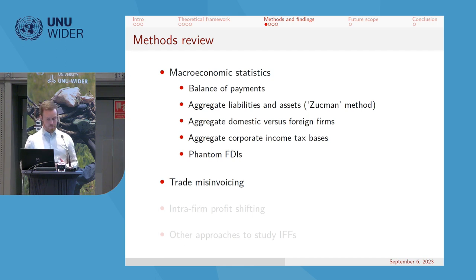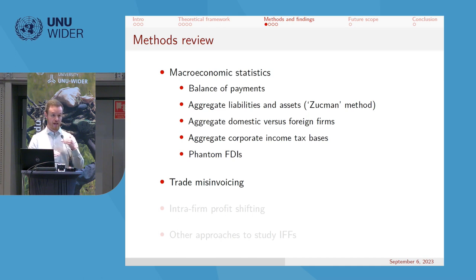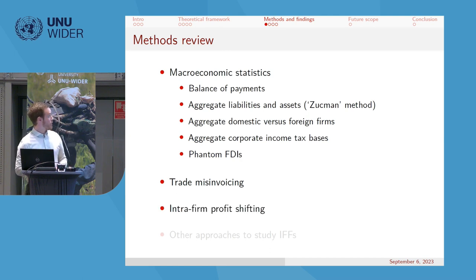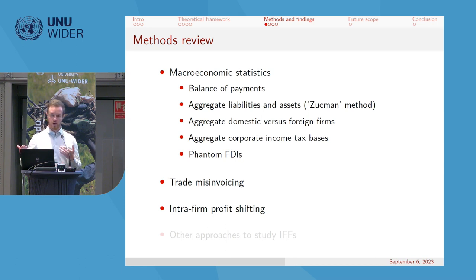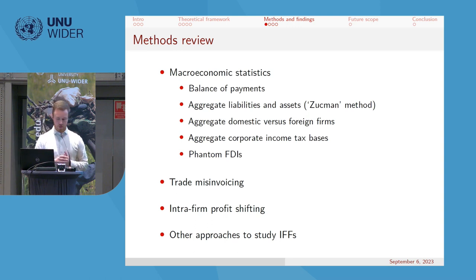The second method is trade misinvoicing: firms have an incentive to over-report import costs to bring revenues and costs to match, producing zero profits — which depends on the corporate tax rate. A third method examines intra-firm profit shifting, which is well studied. The basic idea is that multinational firms have an incentive to shift profits from high-tax to low-tax environments.